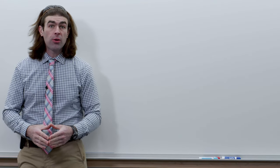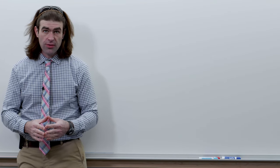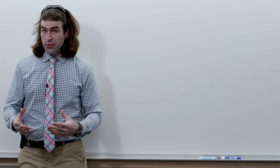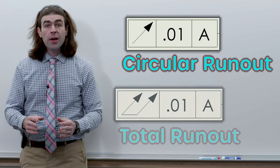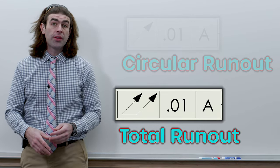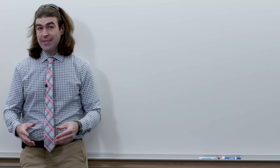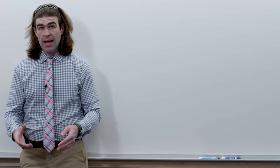In this video I'm going to go over runout tolerances. So there's two runout tolerances, circular runout and total runout. What they do is control the surface variation relative to a datum axis.